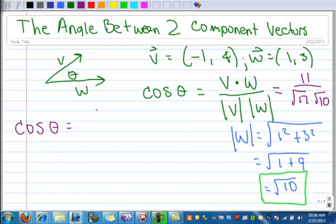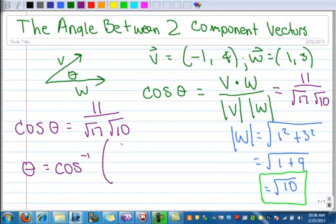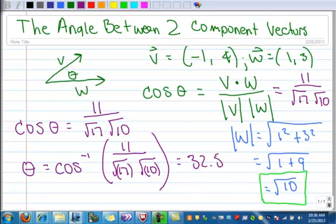You don't even need to multiply that together. You can just leave it just like that. So theta is the inverse cosine, or arc cosine. Now you can just type all this in at the same time. Don't forget to close your parentheses when you use your square root symbol. When you do all of that, you end up with 32.5 degrees. So the angle between these two component vectors is 32.5 degrees.